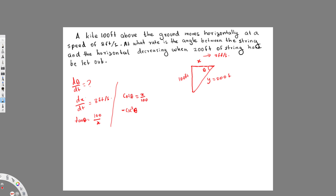So we get: −csc²θ · (dθ/dt) equals the derivative of X/100, which is (1/100) · (dx/dt). We can write csc²θ as 1/sin²θ, giving us: −(1/sin²θ) · (dθ/dt) = (1/100) · (dx/dt).